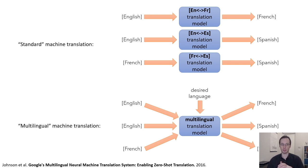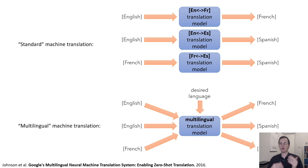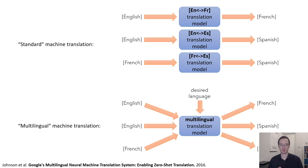You would take this multilingual model, give it your sentence in whatever language it happens to be in, tell it to turn it into Spanish, and it would output the corresponding sentence in Spanish. Crucially, such a model can be trained on exactly the same data as the collection of standard models. You take all your paired English and French sentences and label those as having target language French; take all your French-to-Spanish sentences and label those as target language Spanish, and so on. Training such a model doesn't require any other data — you're just using the data you already have in a different way.